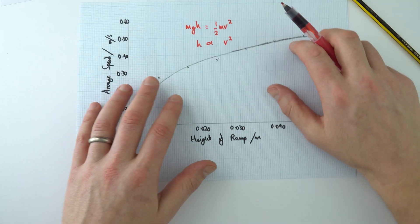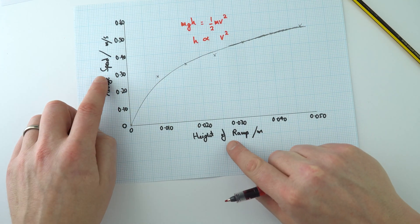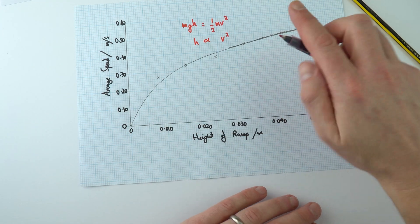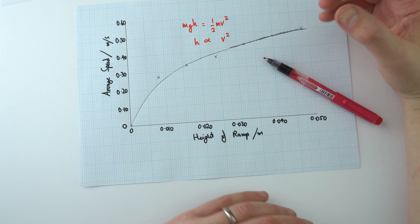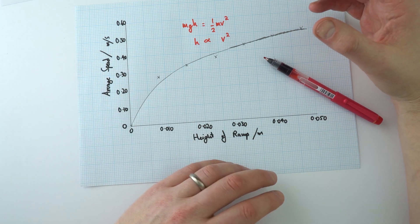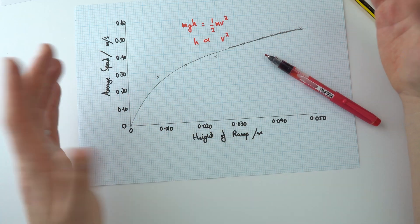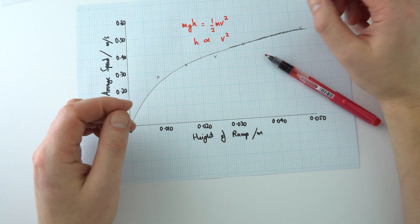The reason we do experiments is to investigate the link between different things. We can then show that graphically on a graph, and then this maybe allows us to actually understand some of the underlying physics in a little bit more detail. That was just a very brief introduction to how to do experiments in GCSE physics.